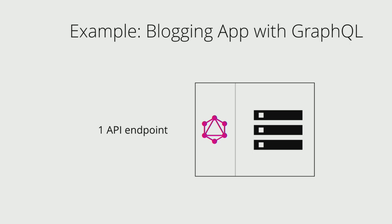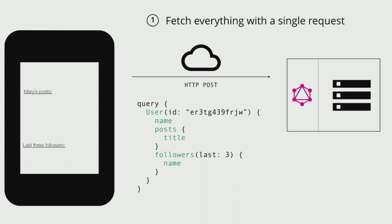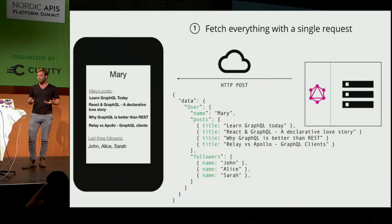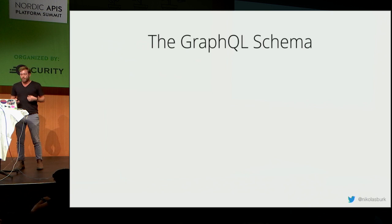With GraphQL you can ask for exactly the data you need at any given moment. We send a single HTTP POST request whose body contains a query specifying the user's ID, name, post titles, and last three followers. We get exactly the information we need in one single request without fetching additional unnecessary data.